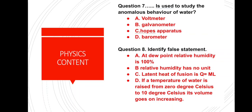Question number 7: What is used to study the anomalous behavior of water? Options: voltmeter, galvanometer, Hope's apparatus, barometer. The correct answer is option C — Hope's apparatus is used to study the anomalous behavior of water.